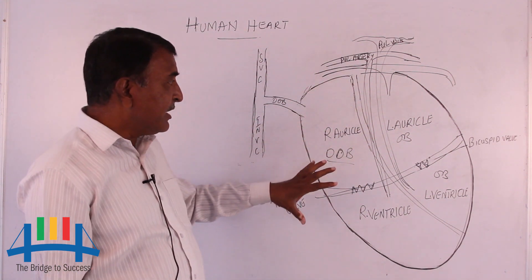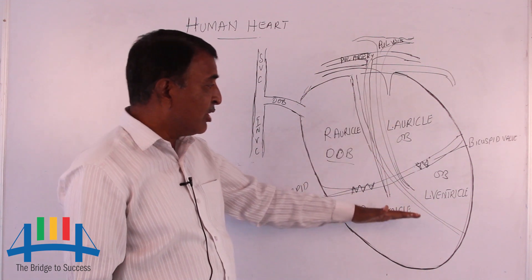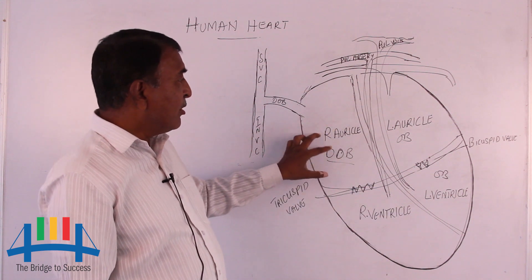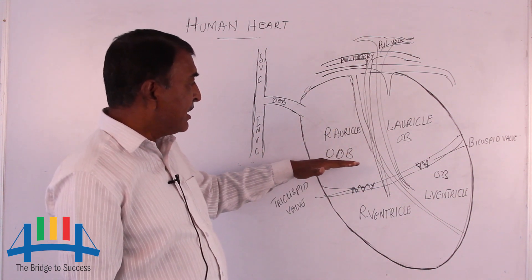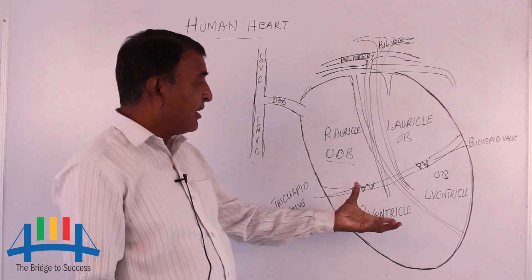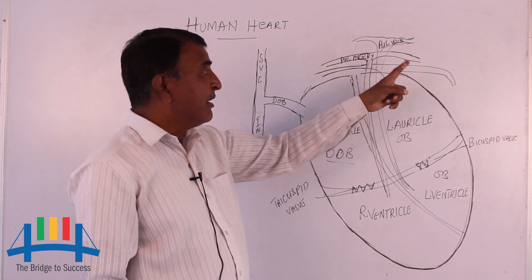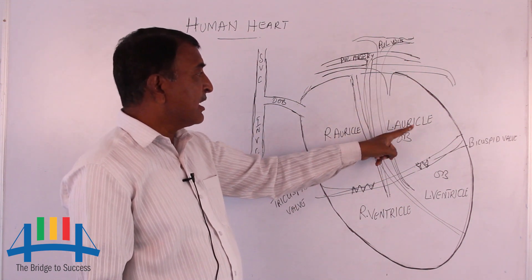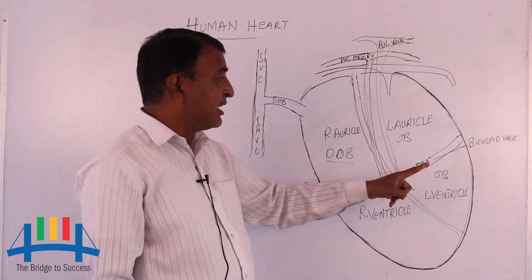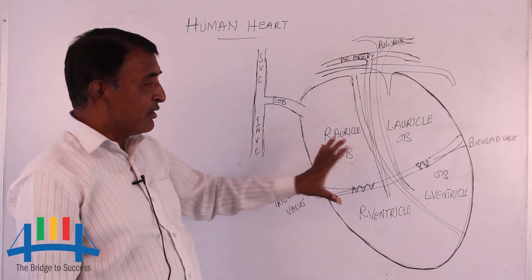To summarize: the upper part of the heart is called the auricles and the lower part is called the ventricles. The right auricle receives deoxygenated blood, and the right ventricle also receives deoxygenated blood. When the ventricles contract, blood is supplied to the lungs. From the lungs, the left auricle receives oxygenated blood. Through the bicuspid valve, the left ventricle receives oxygenated blood and supplies it to all parts of the body.